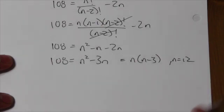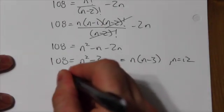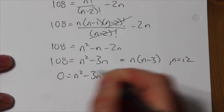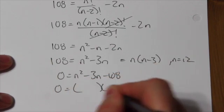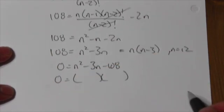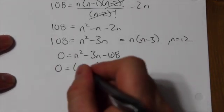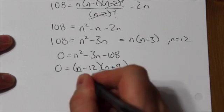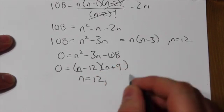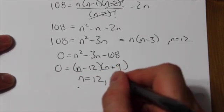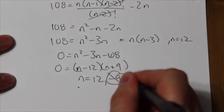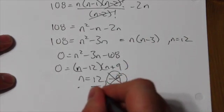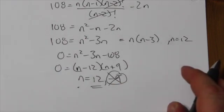But let's say you don't know that. Let's say that's not obvious to you, then you'd bring the 108 over. So n squared minus 3n minus 108, in which case you'd have to go through the process of figuring out those factors of 108 anyway, and you would discover that this will be n minus 12 times n plus 9, which means my two roots here are going to be 12 and negative 9. But again, obviously, the negative 9 I don't allow, so the answer is that this polygon has 12 sides.